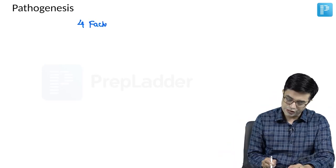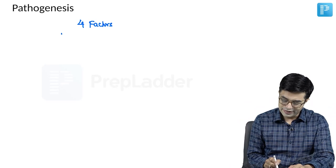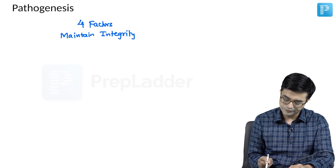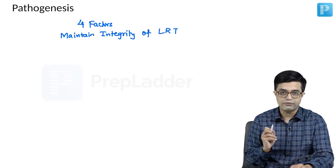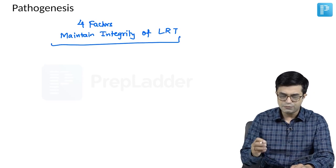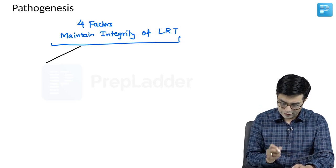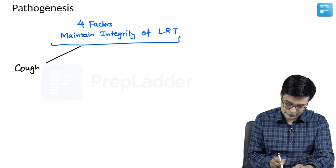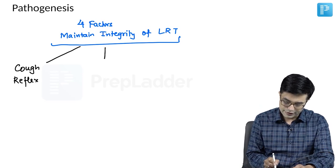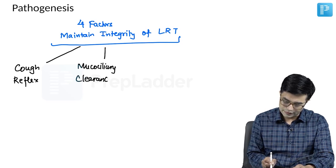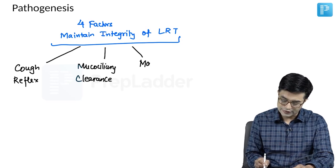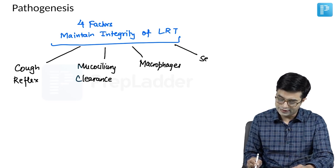There are four factors which maintain the integrity of the lower respiratory tract, and they are the ones which prevent pathogenic bacteria from causing pneumonia. The first factor is the cough reflex. The second factor is mucociliary clearance. The third factor is the presence of macrophages in the pulmonary system. And the fourth factor is the presence of antibodies — we call them secretory IgA.